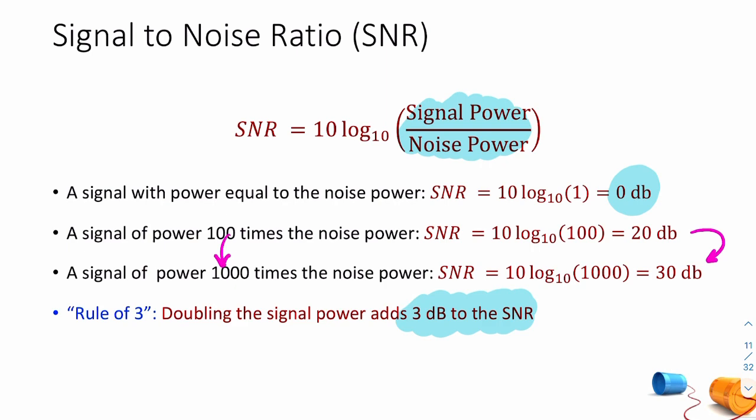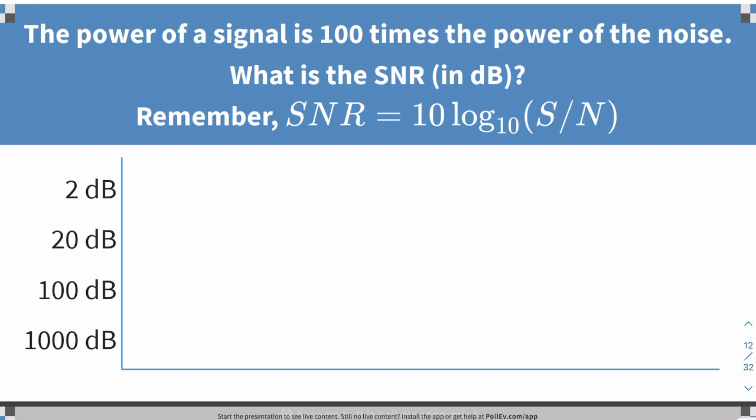Every time you double the signal power without changing the noise power, you add 3 dB to the SNR. To add 6 dB, you double signal power twice; to add 9 dB, three times; to add 10 dB, you multiply signal power by 10. Quick question: if the power of a signal is 100 times the power of the noise, what's the SNR? That gives us SNR = 10 × log(100) = 20 dB.